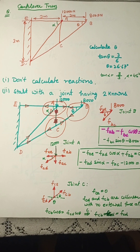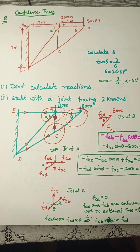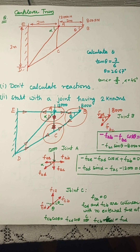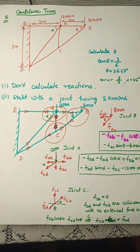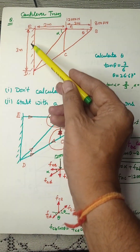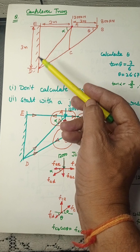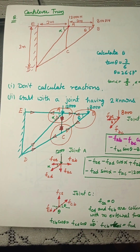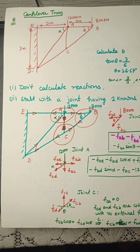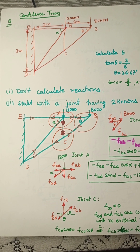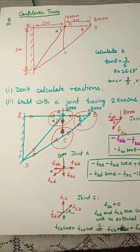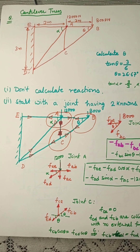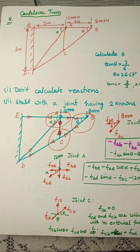Good morning students. Proceeding with the topic of trusses, today we are going to discuss cantilever truss — a special kind of truss in which one end is completely fixed and the second end is free. This is an example of a cantilever truss. Normally we have trusses with roller or hinge support. Today we are going to discuss how to solve this problem.